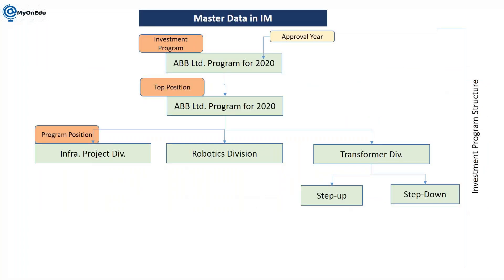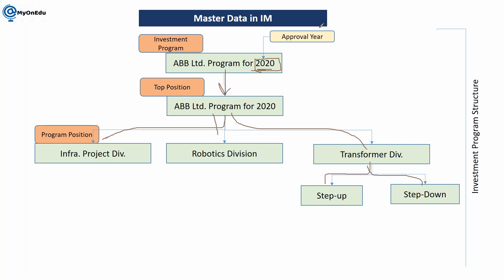You can understand this with this slide. This is an investment program which we plan to approve in a particular year — this year is basically for the approval — and this is my top level position which has next level of positions. We have seen in the system how we can execute these transactions.